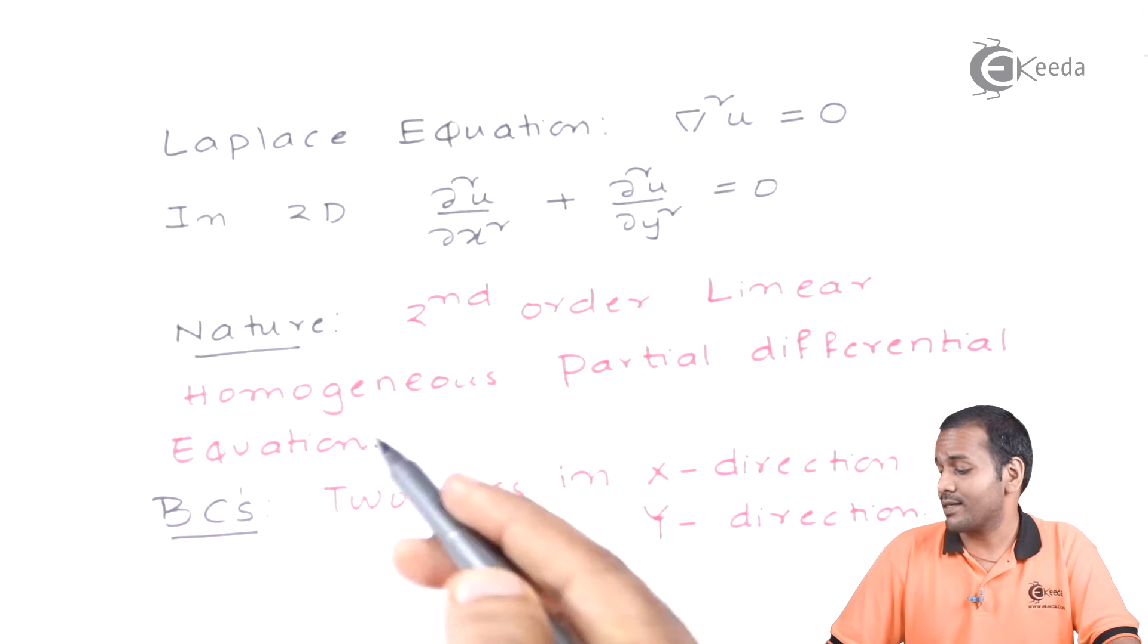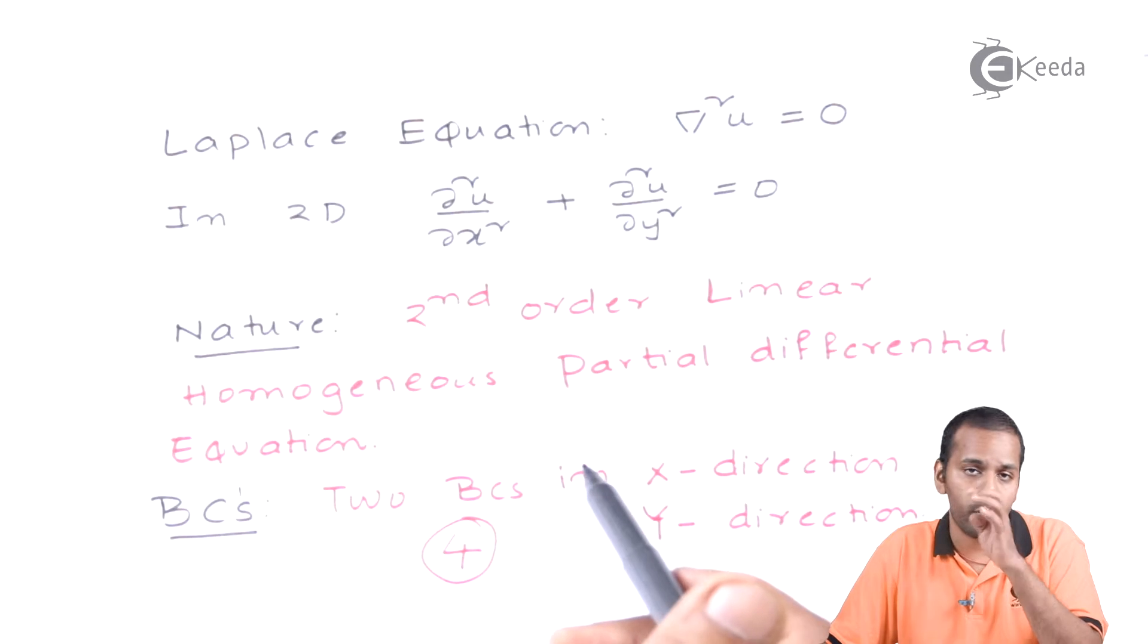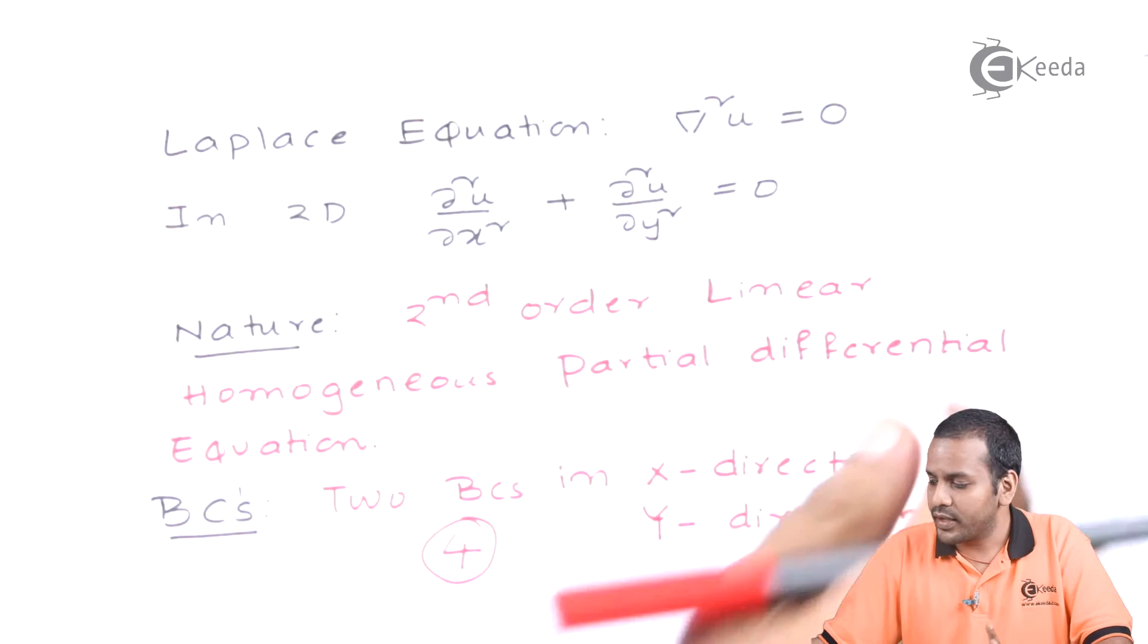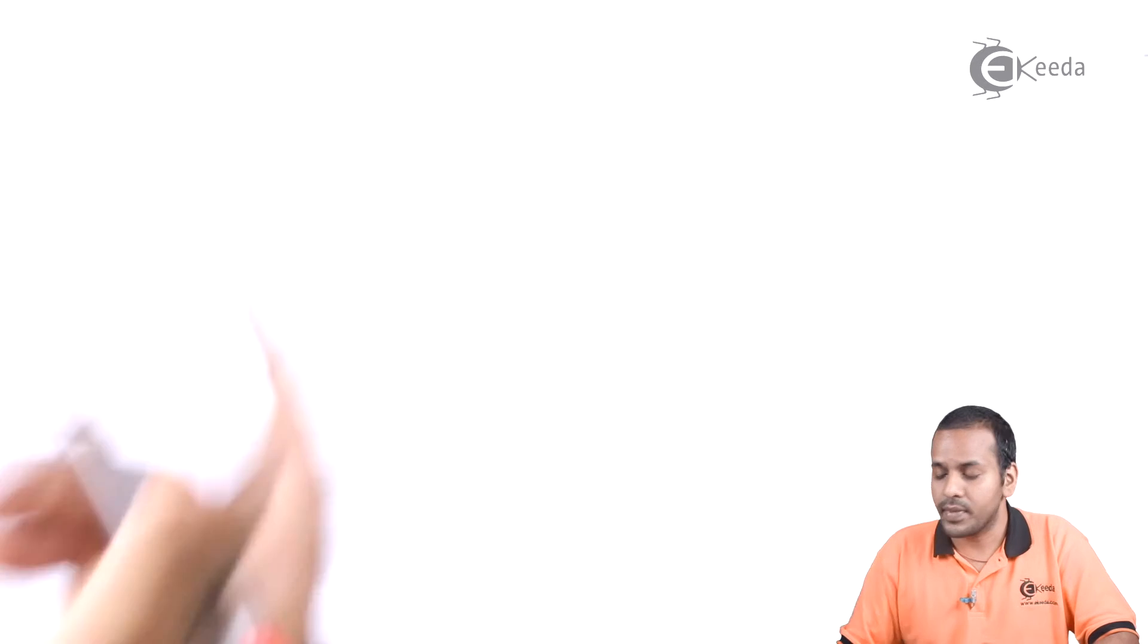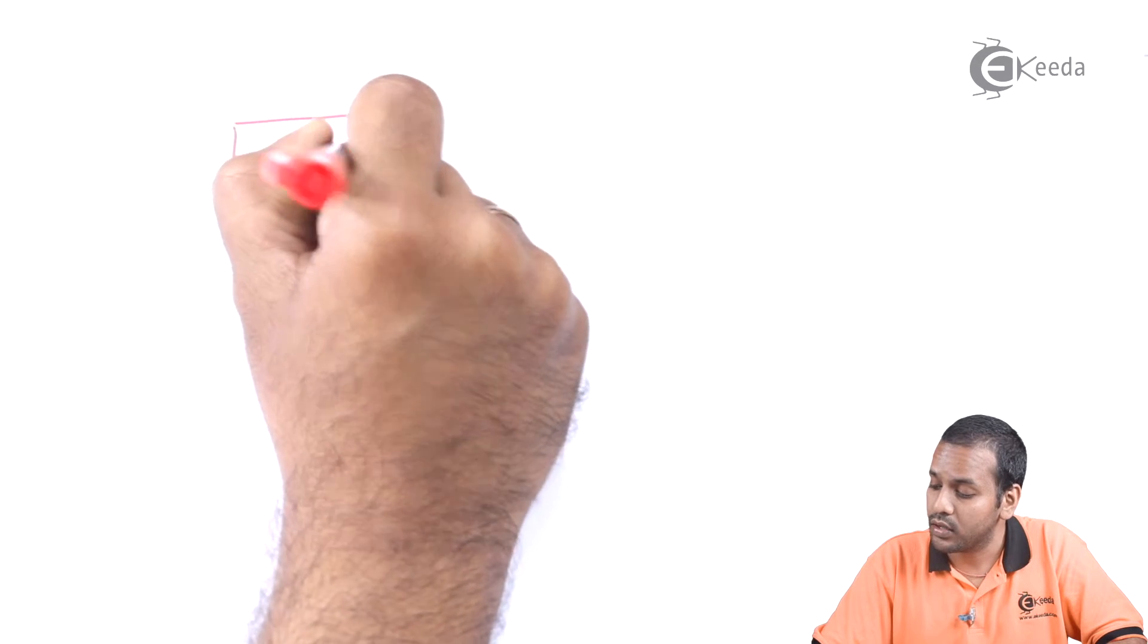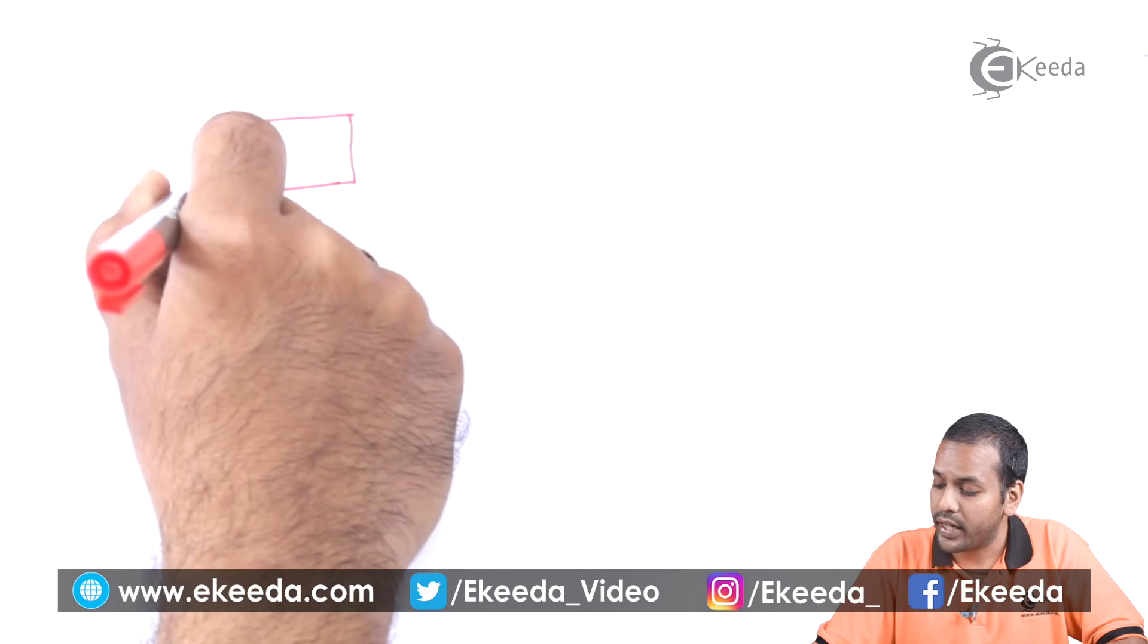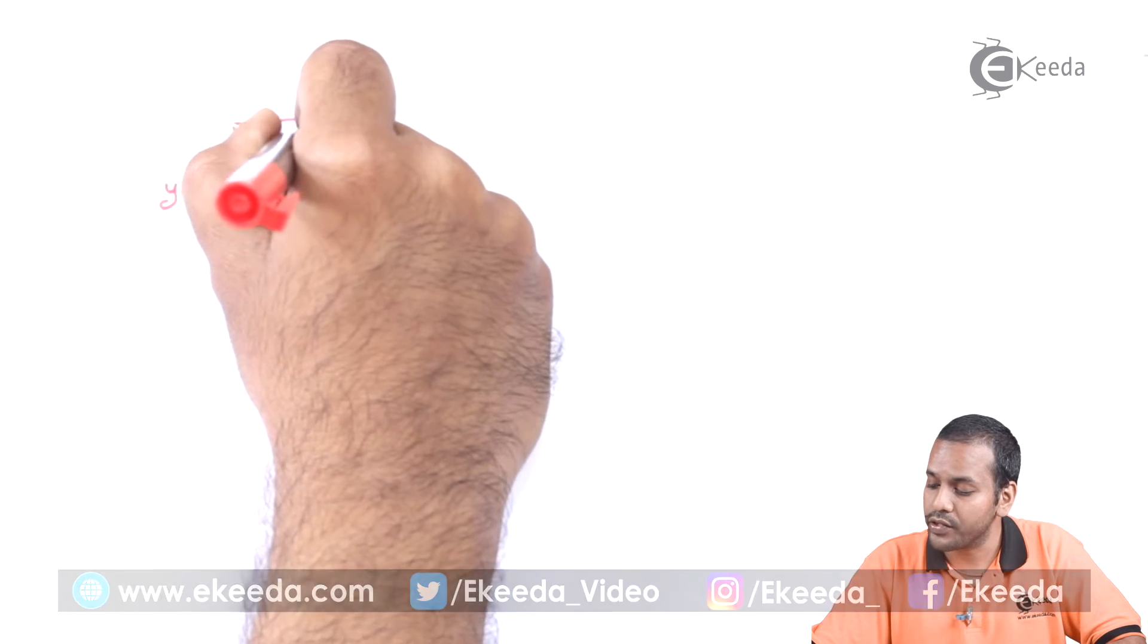What is the domain here? It is a completely closed domain. If I want to solve this equation over some square, let us say my domain is a square. This is my x direction and this is my y direction.